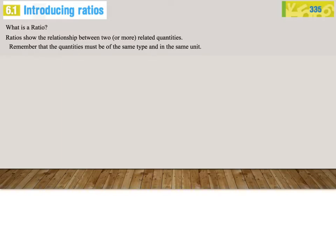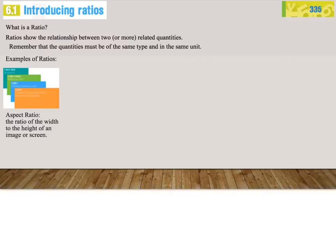We will now look at some examples of these ratios. And although it looks like a lot, I hope it will give you a better idea of what a Ratio really is. Aspect Ratio is the ratio of the width to the height of an image of a screen.